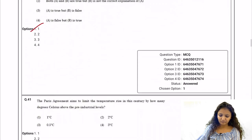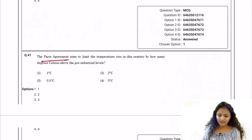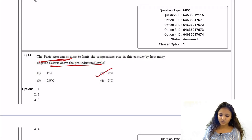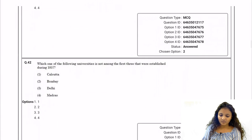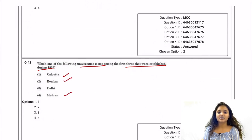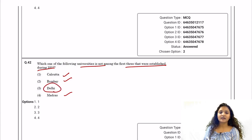Question 41: The Paris Agreement aims to limit temperature rise this century to how many degrees Celsius above pre-industrial levels? The correct answer is option two — two degrees Celsius. Question 42: Which university is not among the first three established in 1857? Calcutta, Bombay, and Madras were established in 1857. Delhi University was established later. The correct answer is Delhi University — option three.